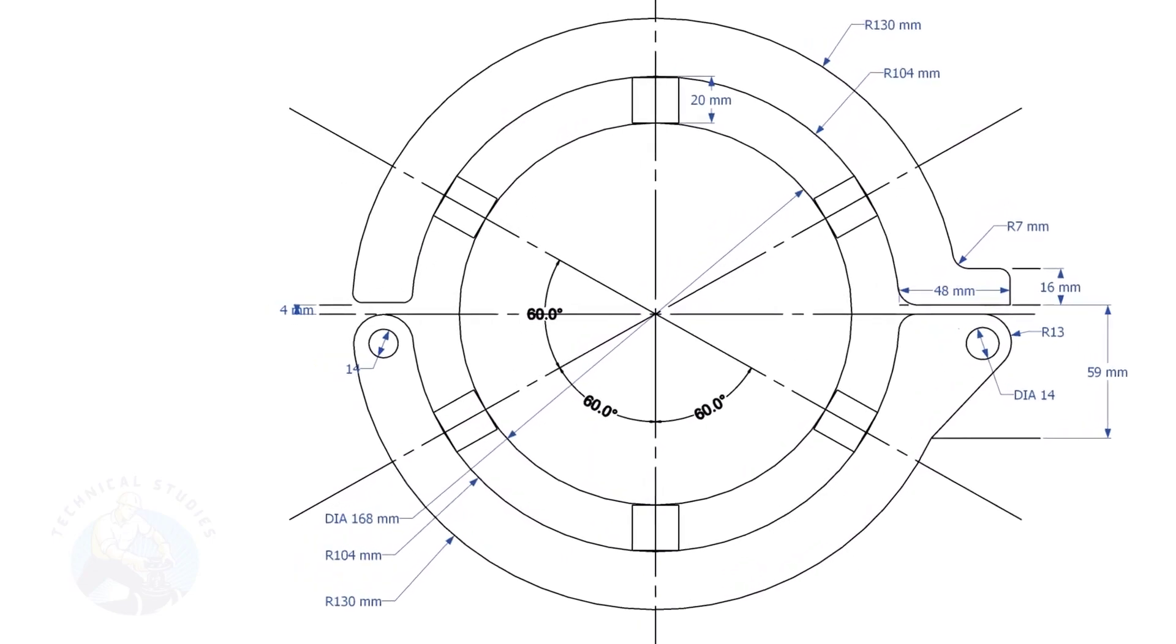This layout is for a 6-inch diameter pipe clamp. Draw the center lines and draw a circle of diameter 168 millimeters, that is the OD of the 6-inch pipe.